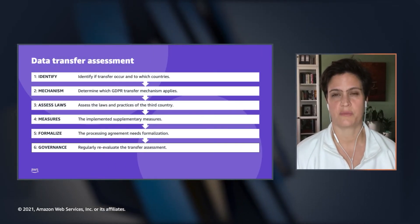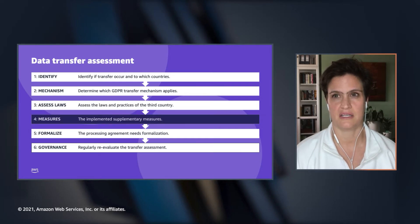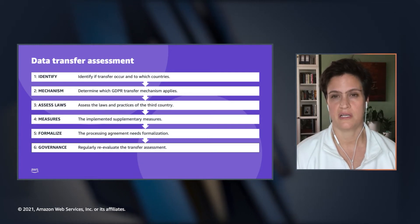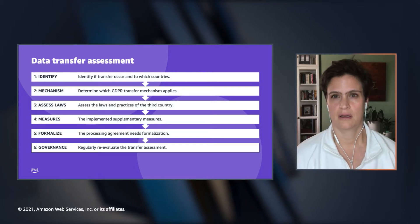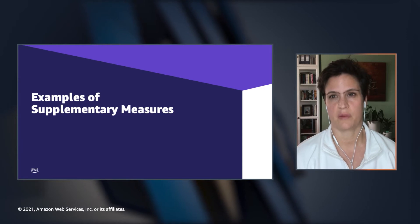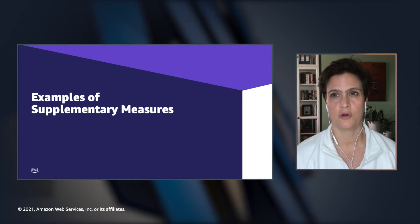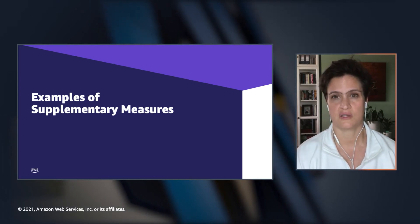This session focuses on supplementary measures, so step four of the list that you see in front of you. Another session focuses on the data transfer assessment overall, covering all six steps. This session will be looking at the measures that can be implemented or are already implemented in relation to step four. This is not an exhaustive list but provides you with an overview of the measures that AWS makes available and measures that you as the customer can implement.